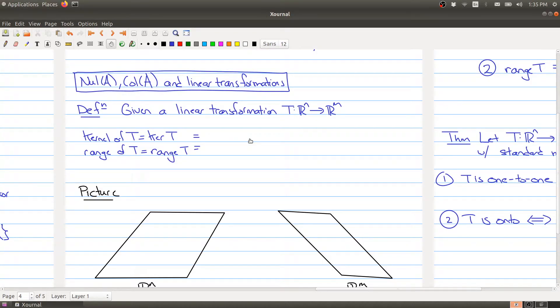Welcome back. In this part, we want to connect the notion of null space and column space with what's going on with linear transformations. Remember that we have a linear transformation, which is a map from Rn to Rm, and we can define certain things coming from this linear transformation, namely the kernel and the range of the linear transformation.